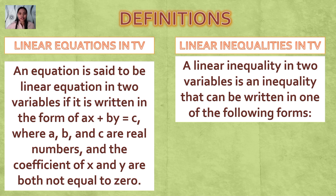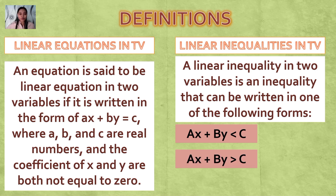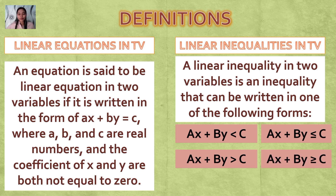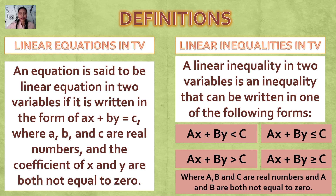A linear inequality in two variables is an inequality that can be written in one of the following forms: AX + BY < C, AX + BY > C, or AX + BY ≥ C, where A, B, and C are real numbers and A and B are both not equal to zero.